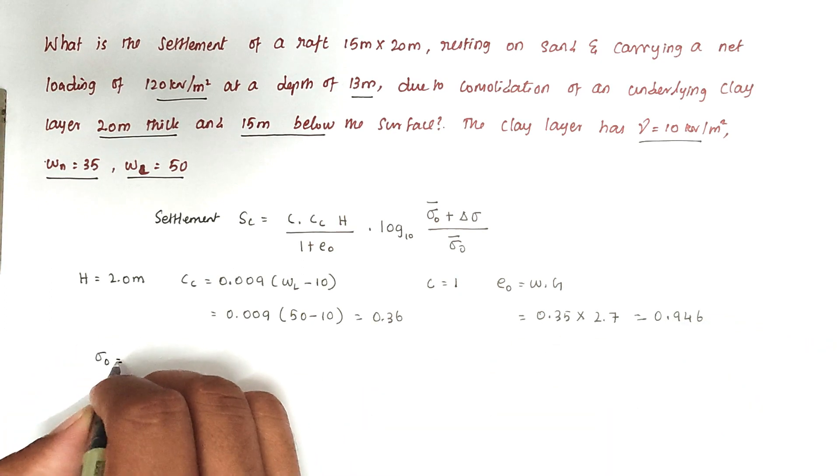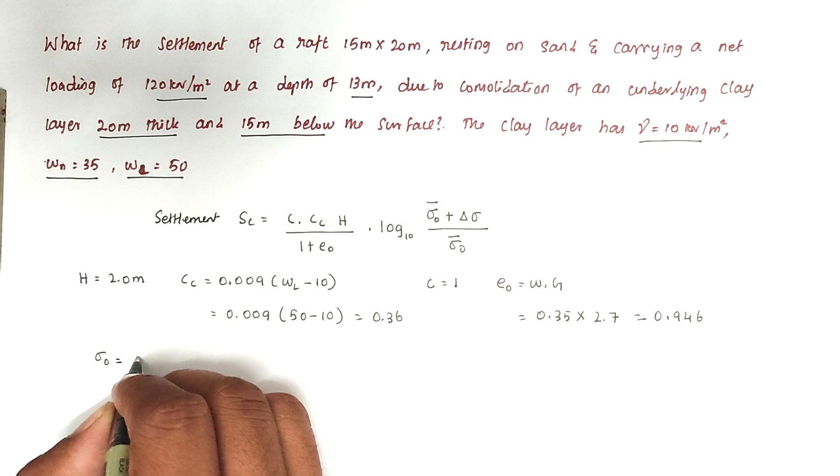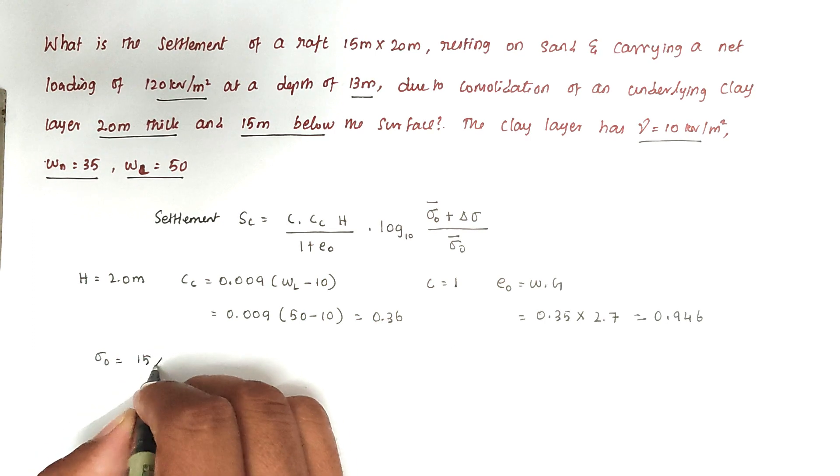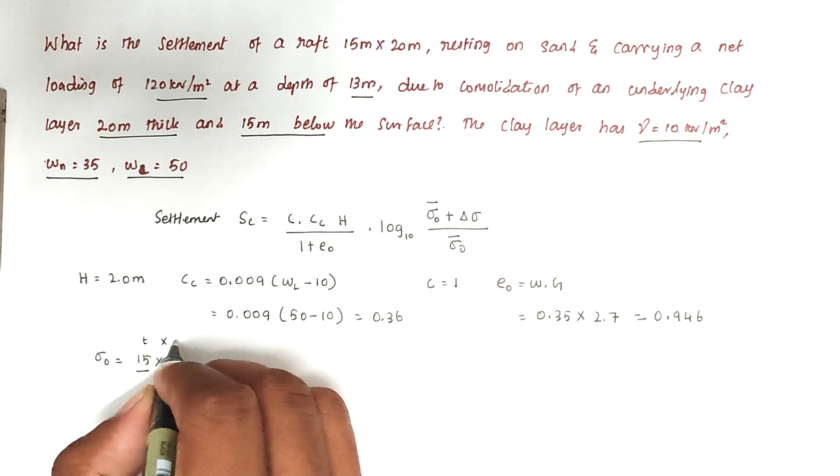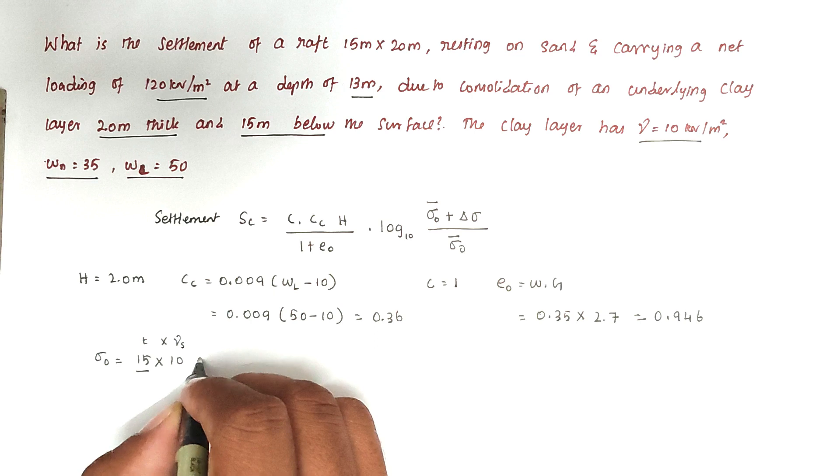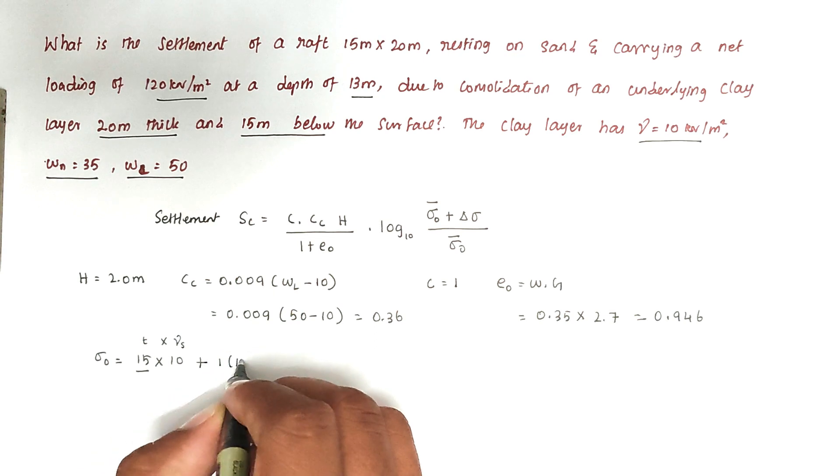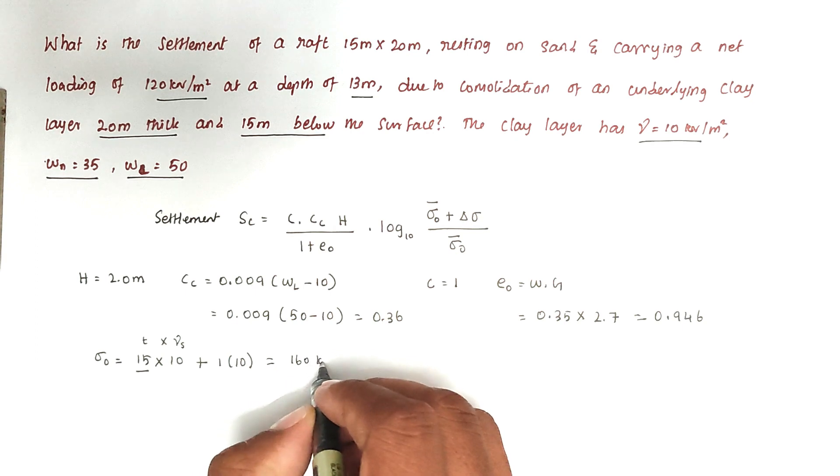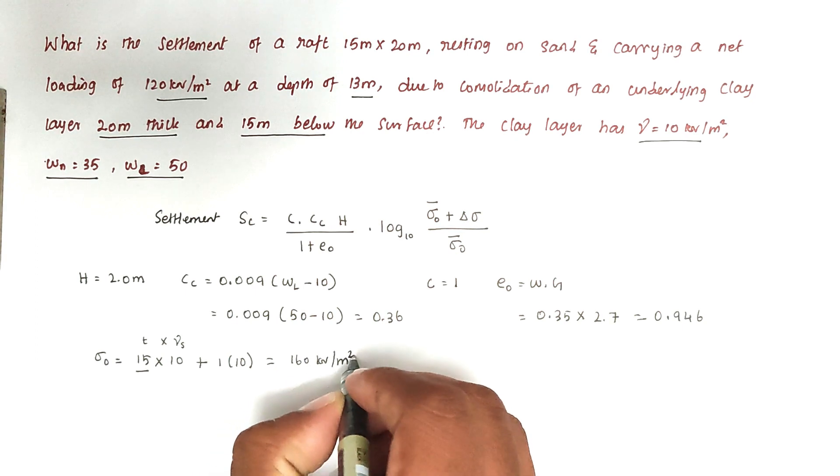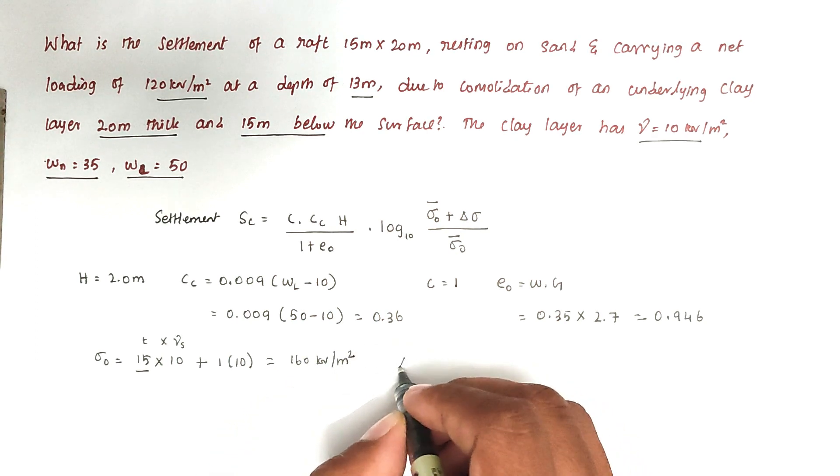Now we have to find out the sigma naught value. Sigma naught equals 15 times 10, where 15 is the thickness and unit weight is 10. So the value will be 160 kilonewton per meter square.